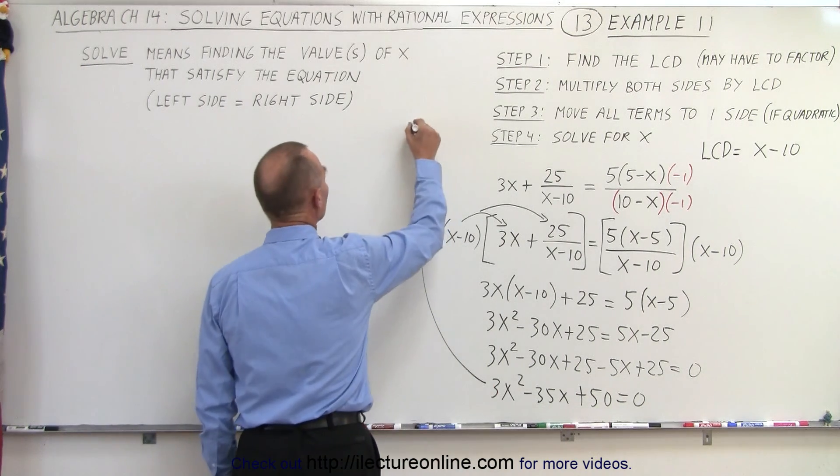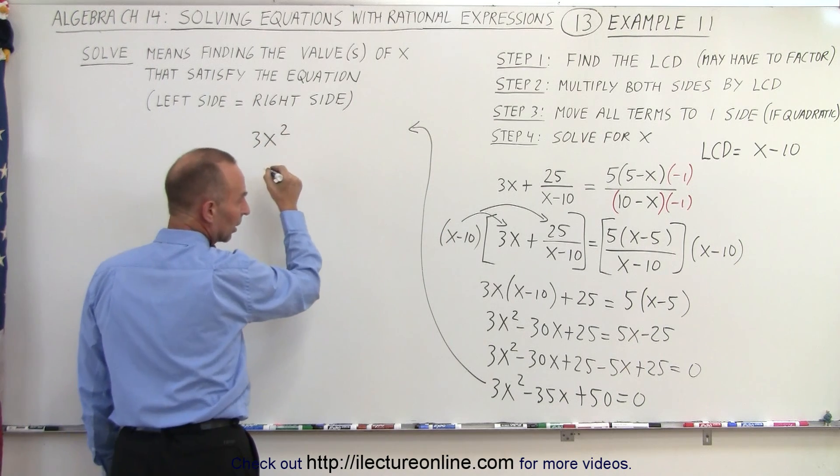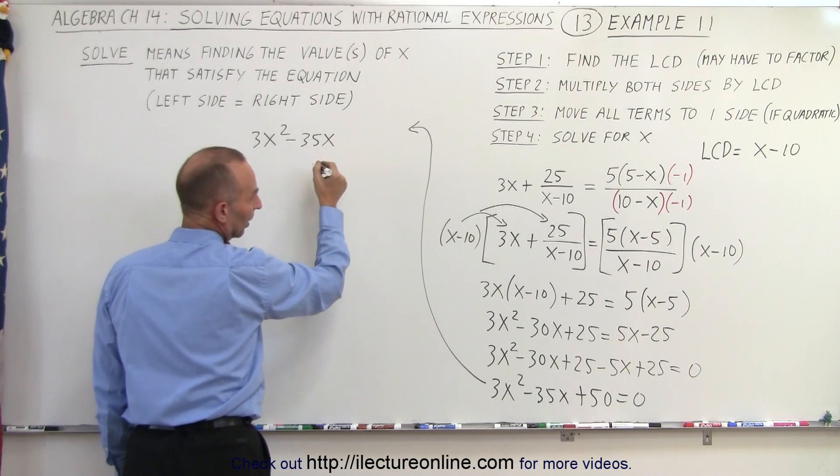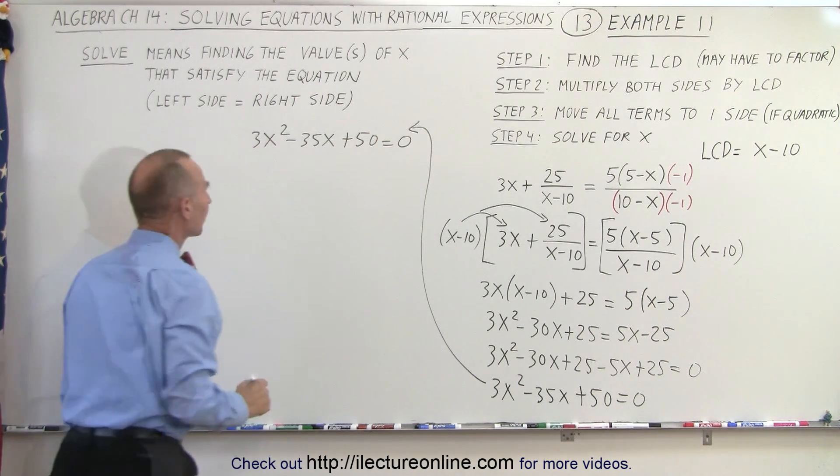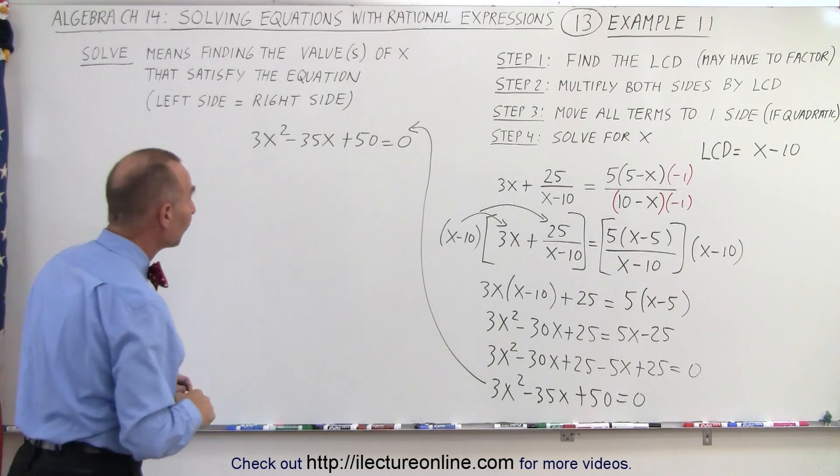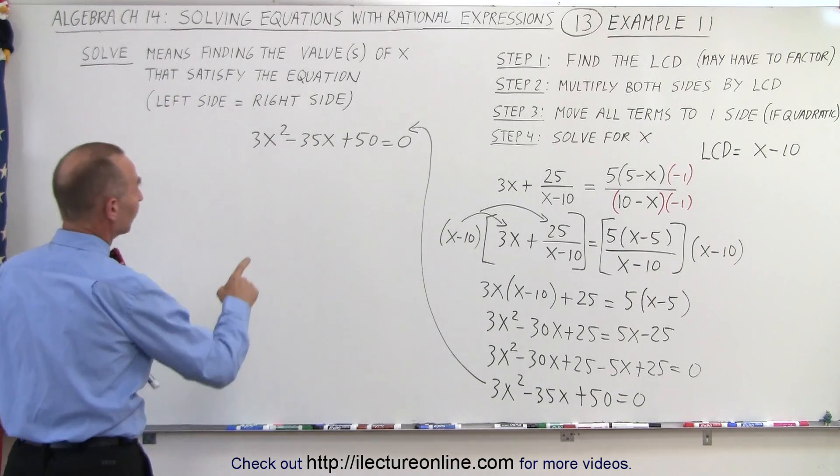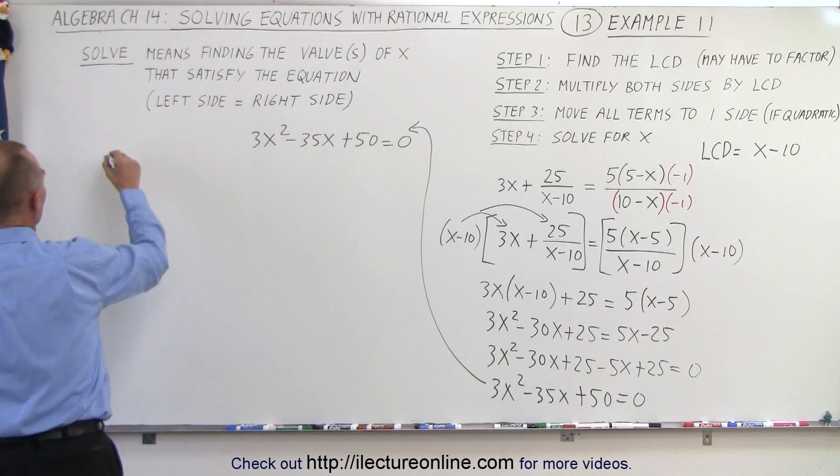plus 25 plus 25 is plus 50 equals 0. And now I'm ready to try and solve that by factoring that quadratic equation. Let's move it over here. 3x squared minus 35x plus 50 equals 0. Now to factor that, we may want to use the FOIL method. Now we have to be careful about the signs because the middle term is negative and this one is positive.